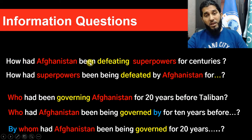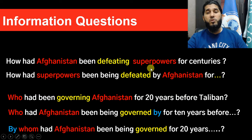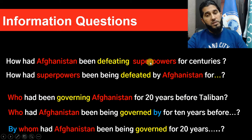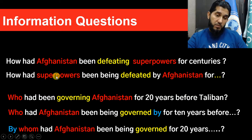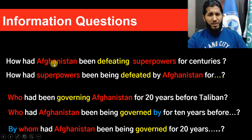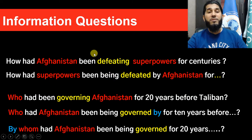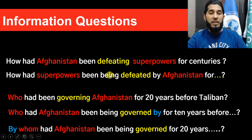For information questions (WH-questions), the question word comes first, then 'had', then the subject, then 'been', then the main verb in -ing form, then object and the rest. For example: 'How had Afghanistan been defeating superpowers for centuries?' In passive form, 'superpowers' becomes the subject, 'Afghanistan' becomes the object of 'by', 'defeating' changes to past participle 'defeated', and 'being' is added. In passive you need three auxiliaries: 'had been being.'